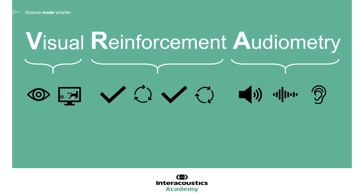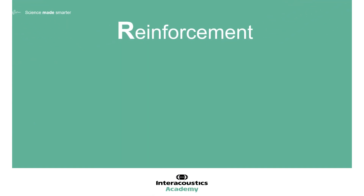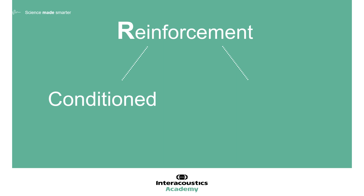An important aspect of VRA is the reinforcement element, as the child sees the visual target each time they look towards it. But what exactly is being reinforced? There are two main important principles of VRA testing, and it is these that are reinforced by the presentation of the visual target. The VRA response is what is known as a conditioned response — the child associates the presentation of the sound stimulus with a reward, in this case the visual target, which they receive upon performing a head turn towards that target. This concept of conditioning is the first principle. The second principle is that we must see that head turn towards the visual target. The visual target is a visual reinforcer, because it serves the purpose of reinforcing the conditioned head turn response throughout testing.